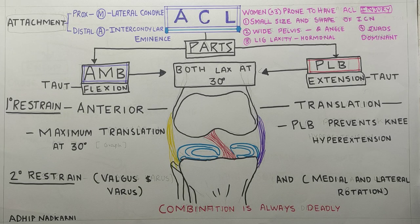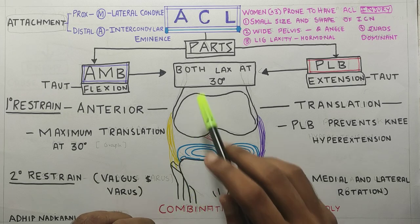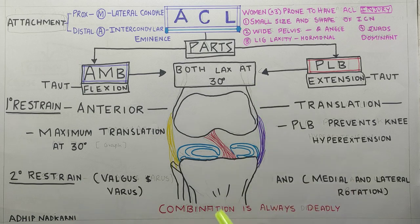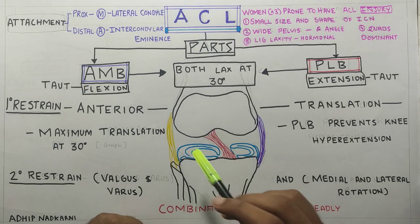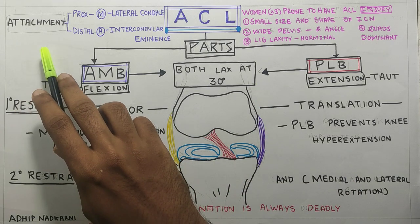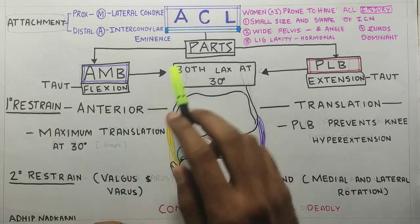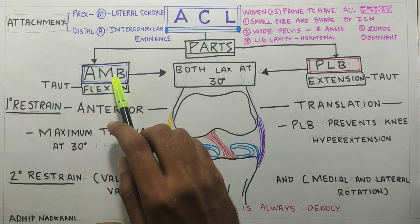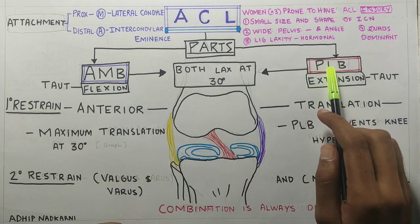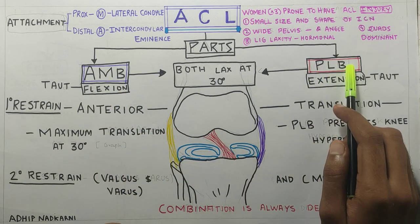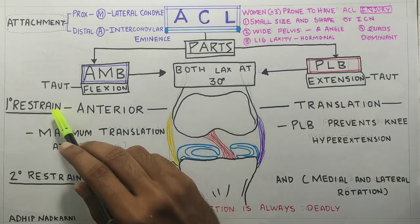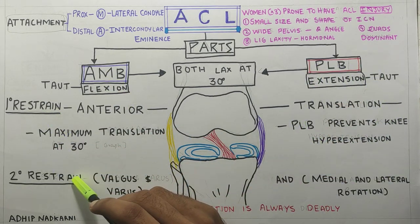In this video, we are going to talk about the ACL, that is the anterior cruciate ligament of the knee joint — its attachments, its parts, that is the anterior medial band and the posterior lateral band. We will also talk about primary and secondary restraint.